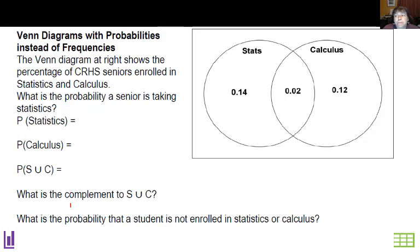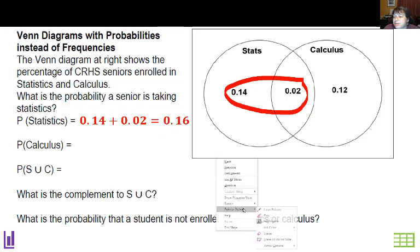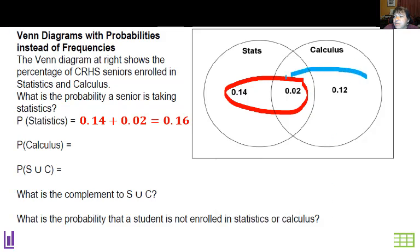So Venn diagrams can also have probabilities instead of frequencies, so you can see this here. This Venn diagram is actually not completely filled out. Now, the probability of stats is going to be right here, because those are in the stat circle, or 0.16. The probability of calculus, which would be inside the calculus circle, and that would be 0.12 plus 0.02, which is 0.14.